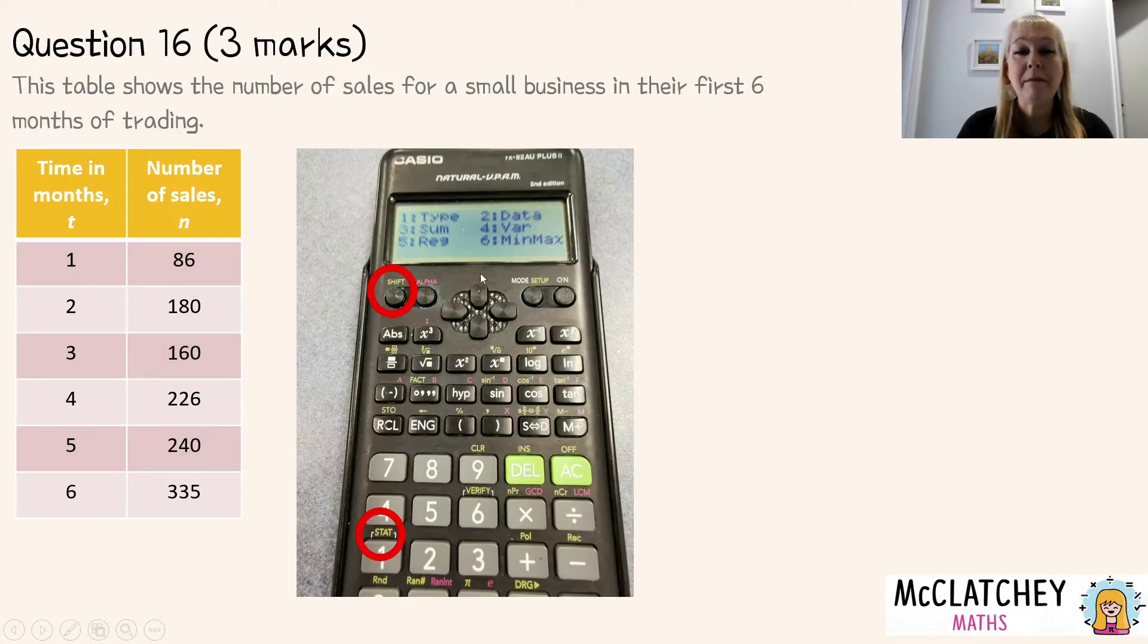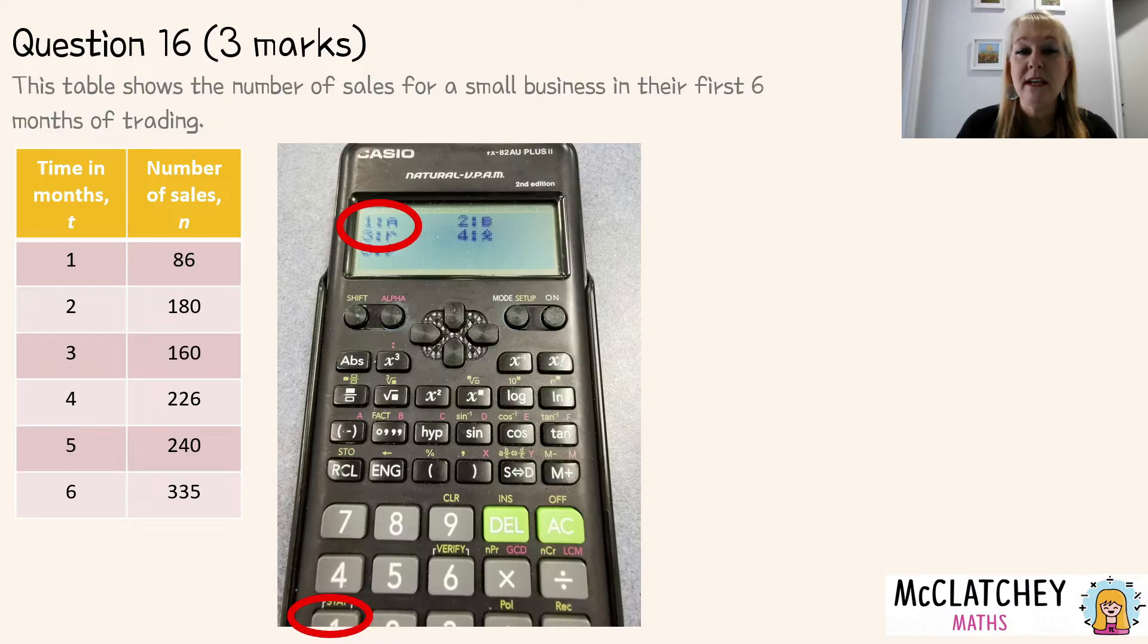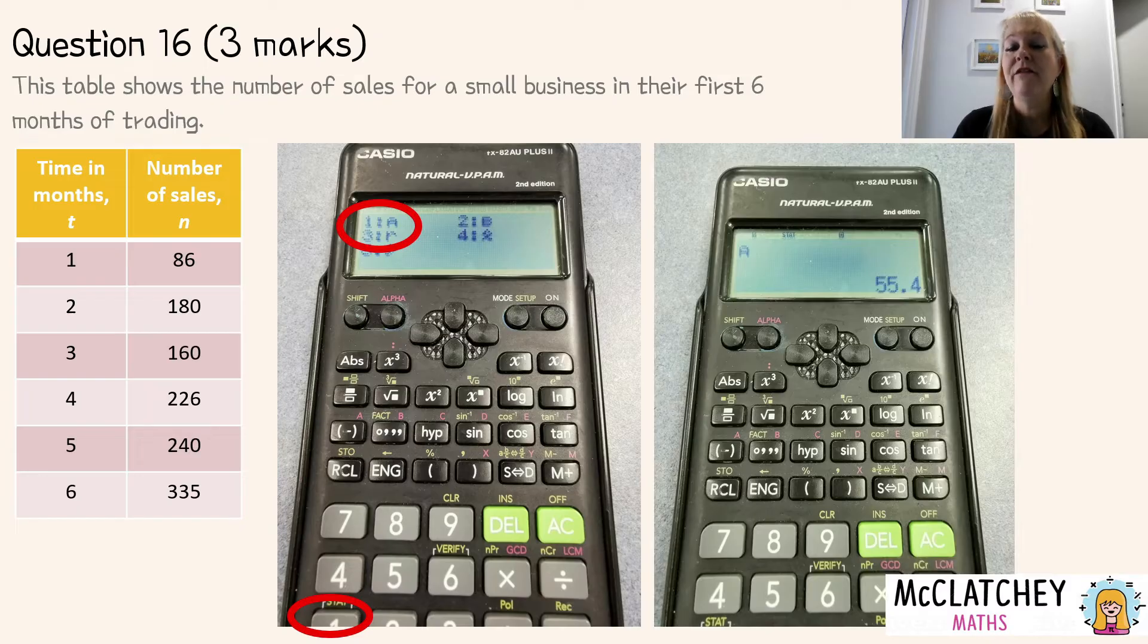Okay so now you've entered your table you're going to press the all clear button the ac button. A lot of students thought that was air conditioning it's all clear and then you're going to end up pressing your shift button back on the top here and the number one button the statistics button right here you can see that circle down the bottom there. So press shift then one. You'll come up with this new menu here and the one we're interested in is this button five. It says reg there that means regression and so we're going to choose the five button.